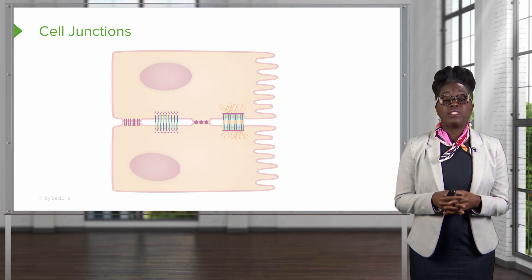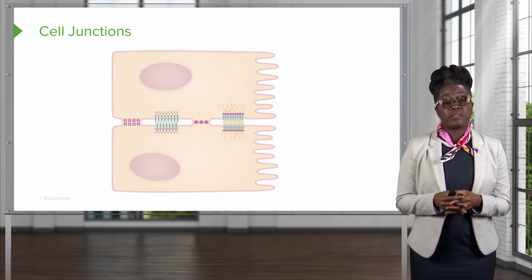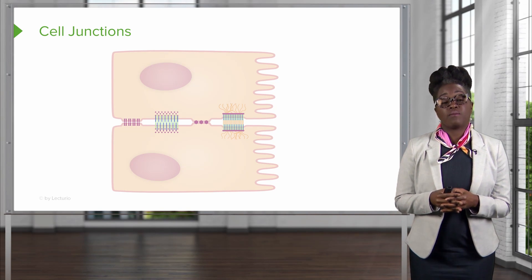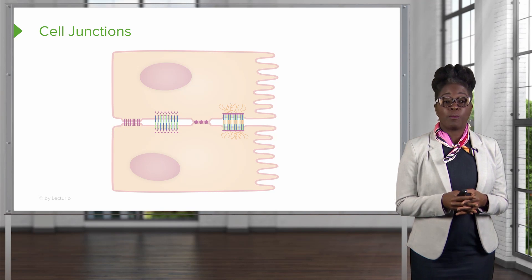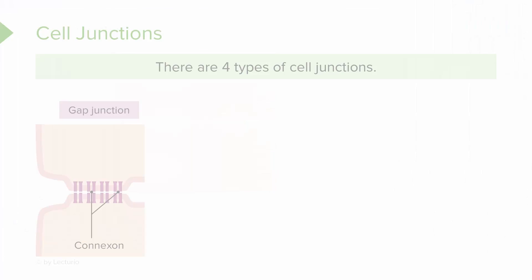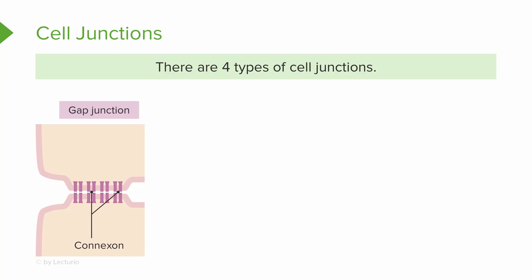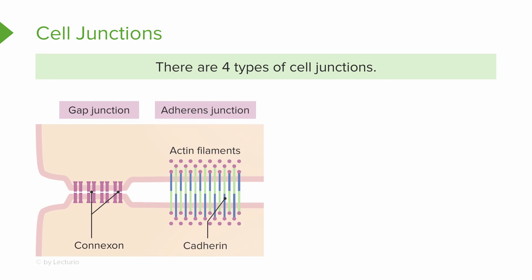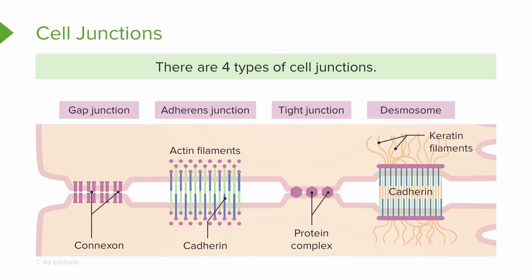There are four different types of cell junctions found in the human body: gap junctions, adherent junctions, tight junctions, and desmosomes.